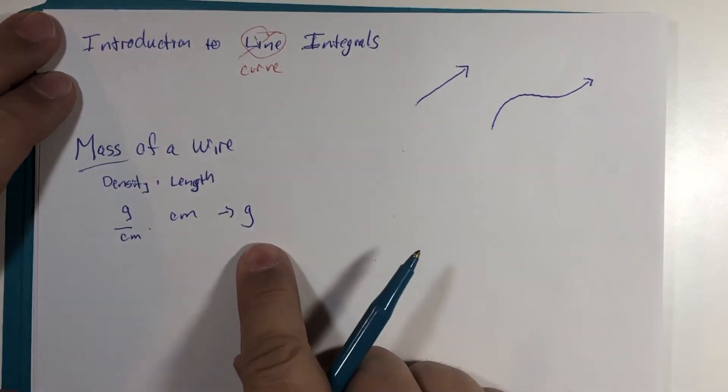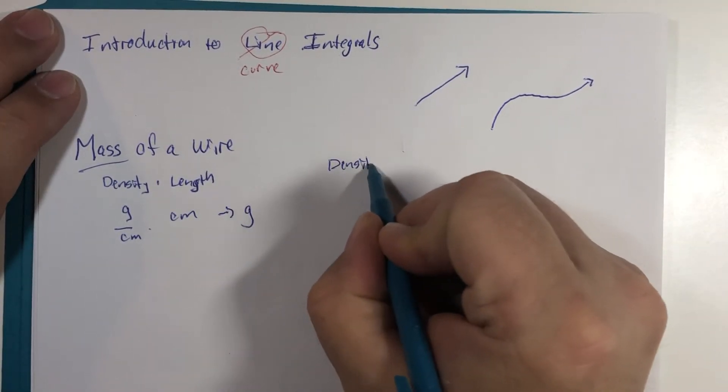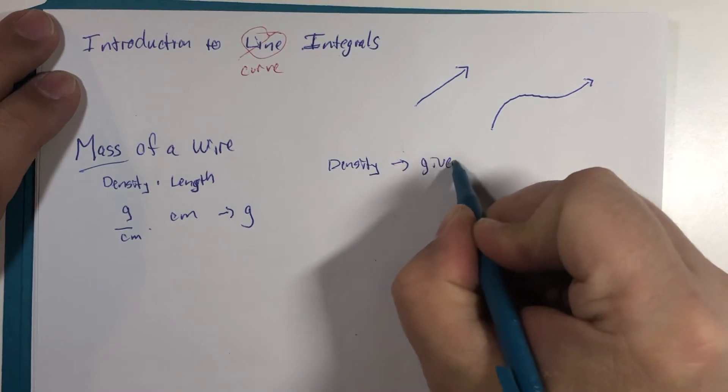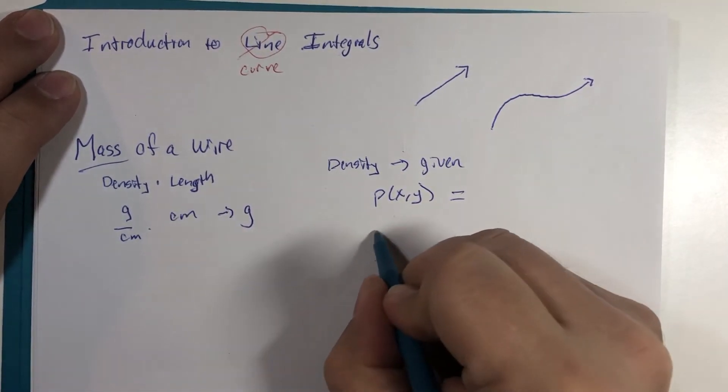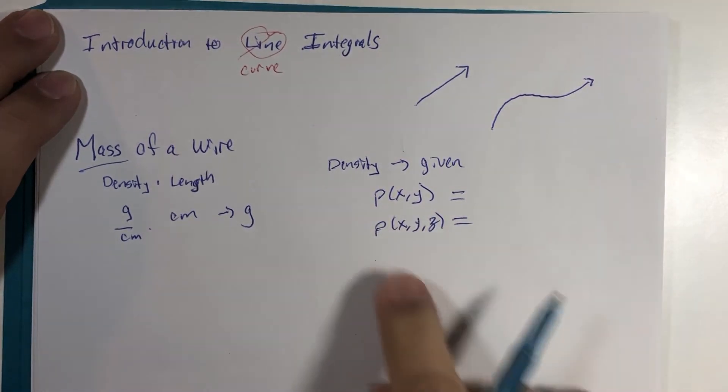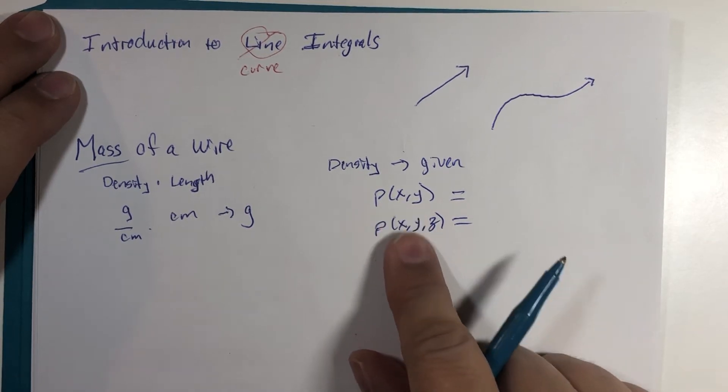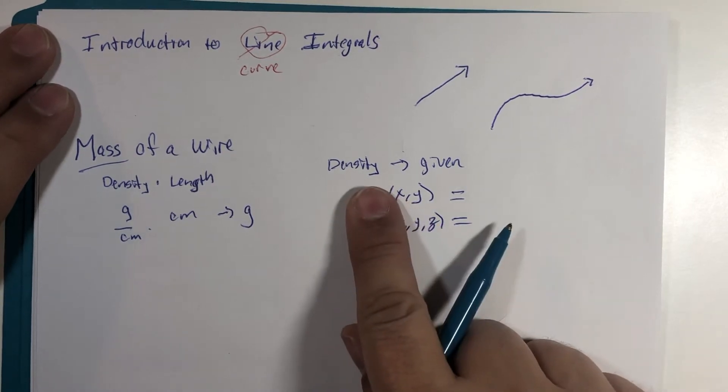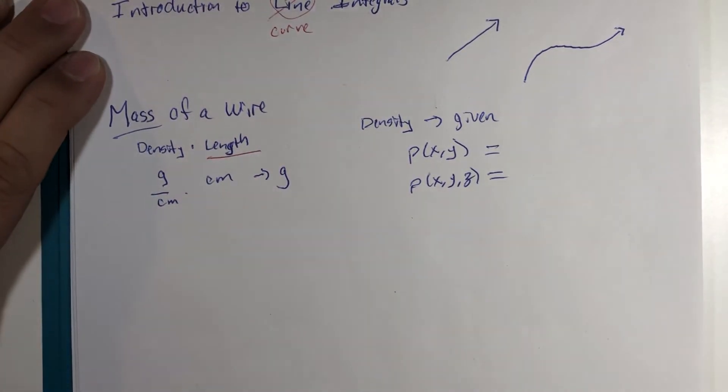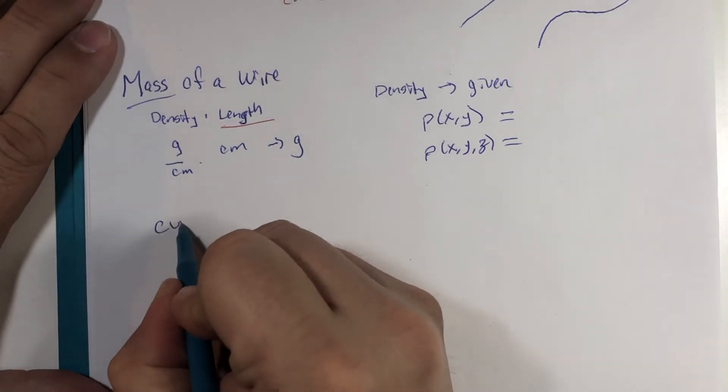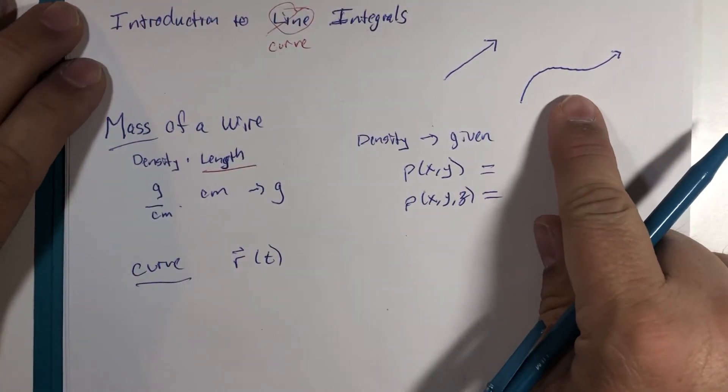Now density will be usually given and it could be rho of x, y or it could be rho of x, y, z. It could even be a single variable but that's not as interesting a case. So if we look at the double or triple variable problem, that's our density function. Now what we need is a way to look at the length. The length itself, well we have our curve and we've been using this notation r of t to measure the curve itself.